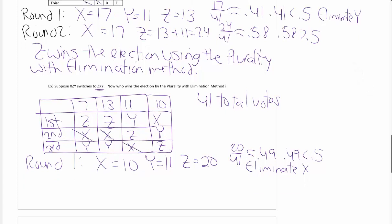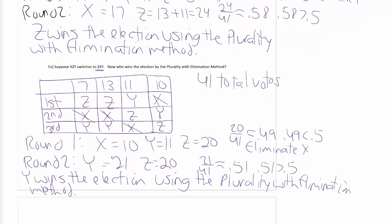Eliminate X from every ballot. The only candidates that are left are Y and Z. Y has now 11 plus the 10 that X lost, that's 21, and Z still has 20. So Y, 21 over 41, is approximately 0.51. That is greater than 0.5. So Y would win the election using the plurality with elimination method.